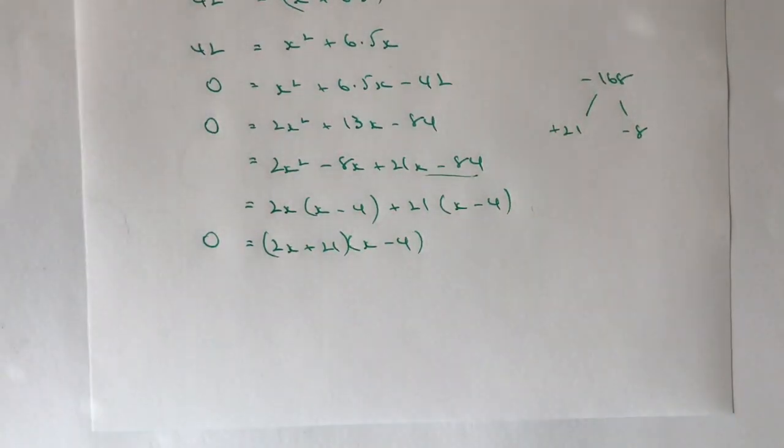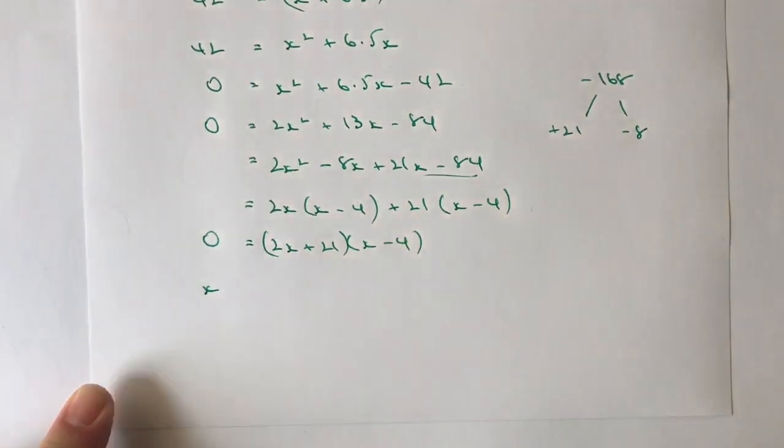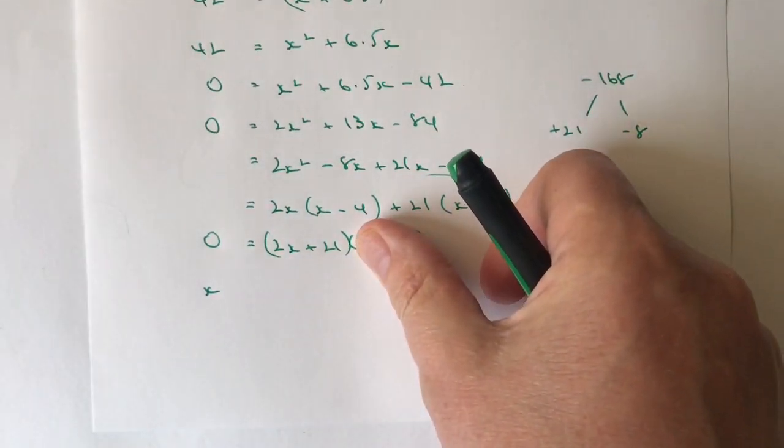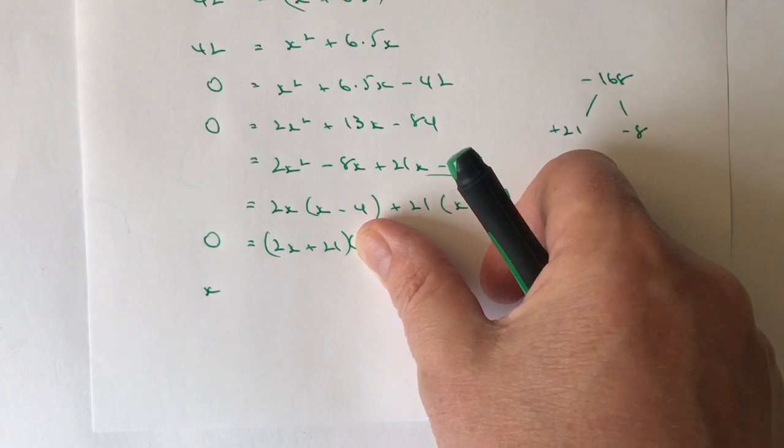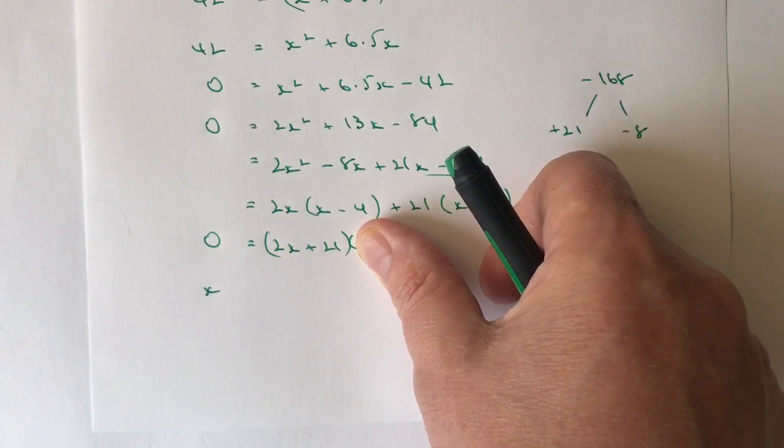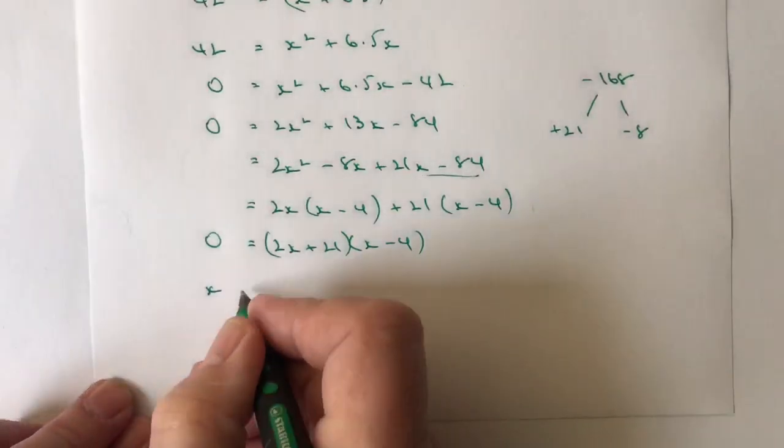So now at long last, I've got my two factors. I've got my two values of x. My first value of x is going to be, if I imagine that I've got 2x plus 21 equals 0, then that means I've got minus 21 equals 2x. So therefore, x equals minus 21 over 2.